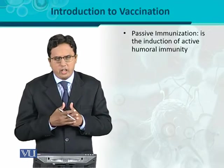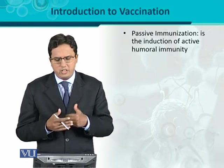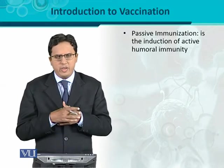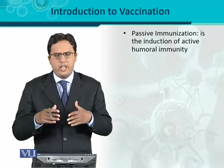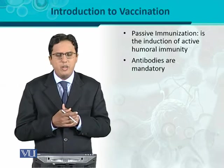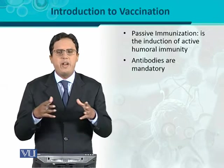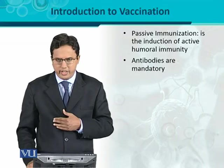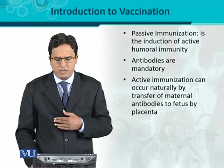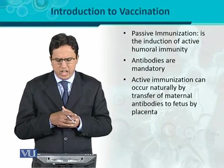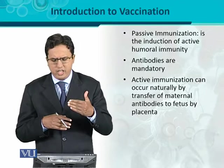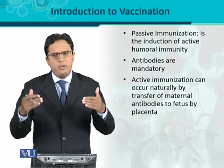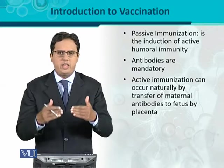In contrast to active immunization, there is passive immunization — the induction of humoral immunity in which there is activation of humoral immunity so that more and more antibodies are produced. Antibody production is very important in this process, and that is why it is called passive immunization. Passive immunization can occur naturally by the transfer of maternal antibodies — antibodies from mother to fetus — which is called natural passive immunization.